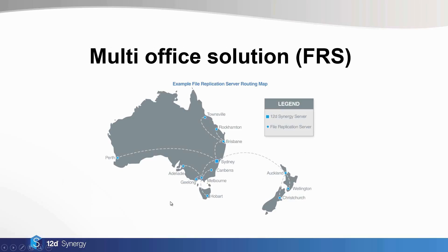We've got an example here of a multi-office solution running the FRS. The main server sits in Sydney, and then you have FRS nodes at each of these locations. The lines here explain the way the data is being transferred, and it's important to note that not every connection is the same — some offices have faster connections, some have slower. The FRS is set up to allow various network topologies so that people can route the data down the best paths. For example, Geelong may not have a great connection to Sydney, but a better connection through to Melbourne, so you can force files to take that transfer path to take advantage of your network topologies.